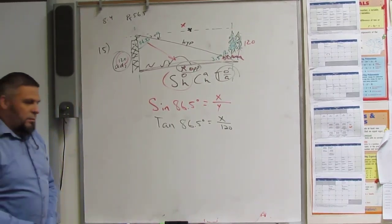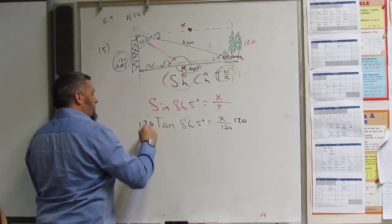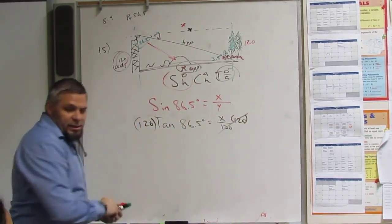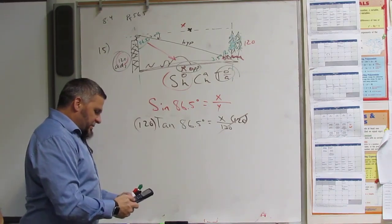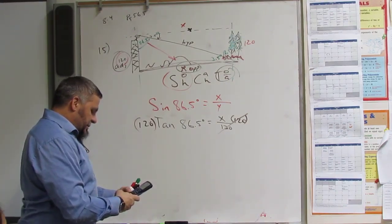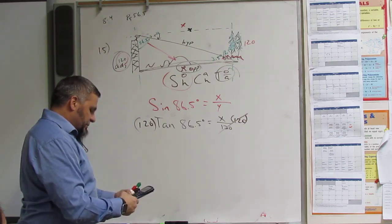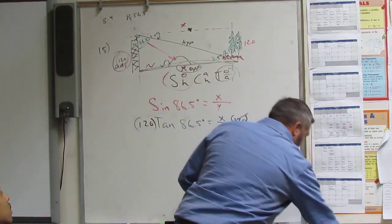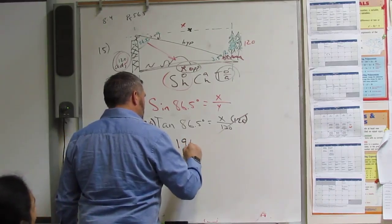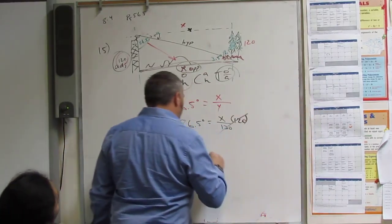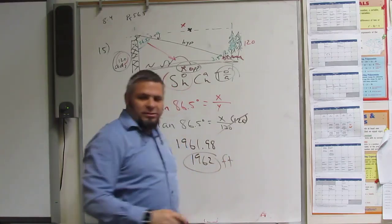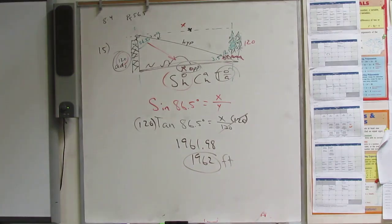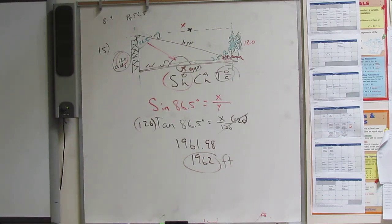Okay? So then I got my calculator out. And I go 120 times tangent 86.5 equals 1,961.58. So they're far away. 1,961.98, which means 1,962 feet. So they're far away. Feet. Yeah. Kind of far. Well, 1,000 feet. Right? Almost a couple of those. Okay. Okay? Does that make sense? Done. Yeah. Yep.